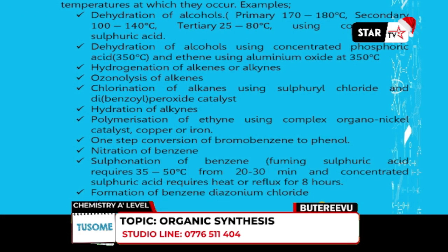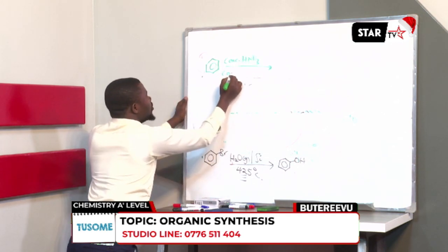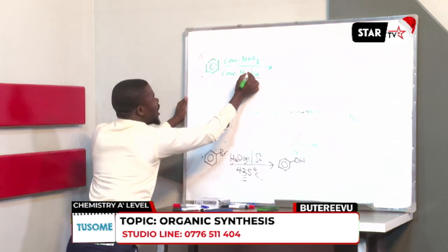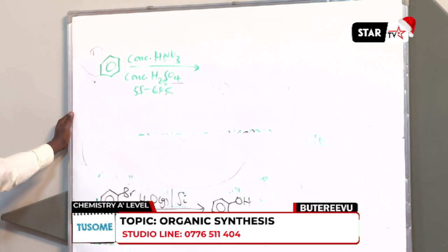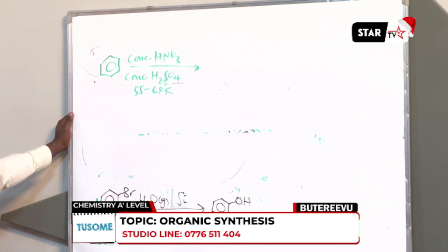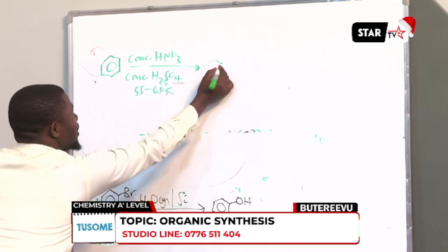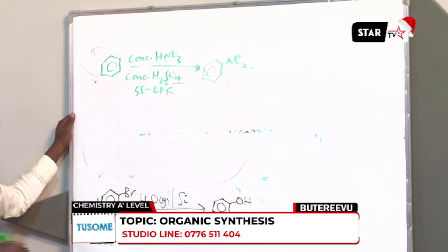The other temperature-specific reaction involves nitration of benzene. If you're nitrating benzene, you use concentrated nitric acid and then concentrated sulfuric acid. This reaction occurs at a temperature between 55 to 60 degrees Celsius — it's a temperature-specific reaction. Don't forget to specify that temperature when doing a synthesis. This reaction gives us a product called nitrobenzene.